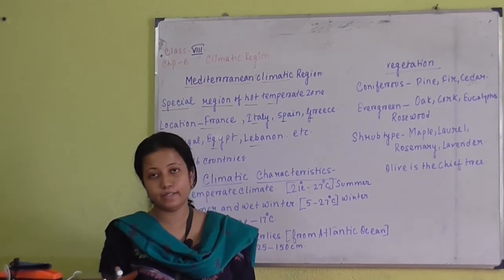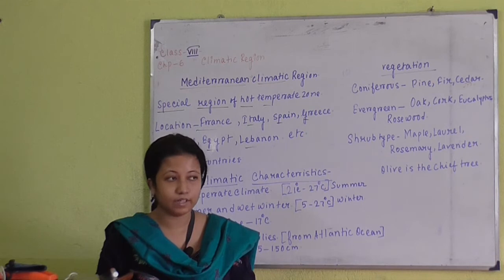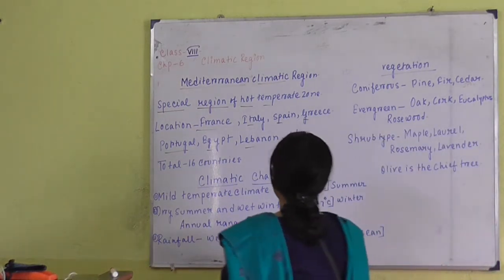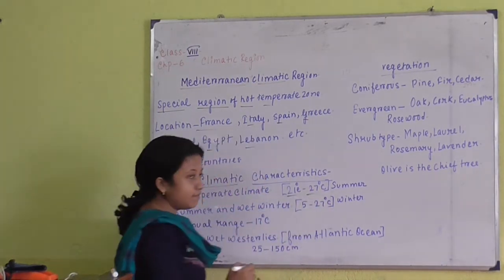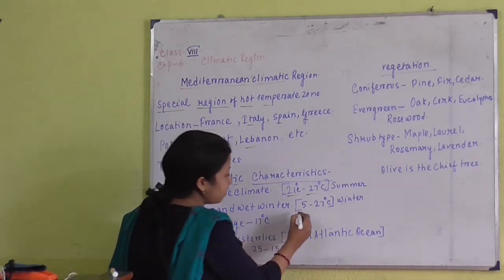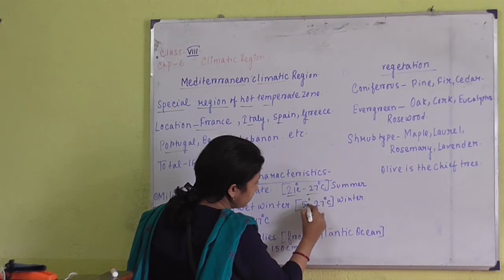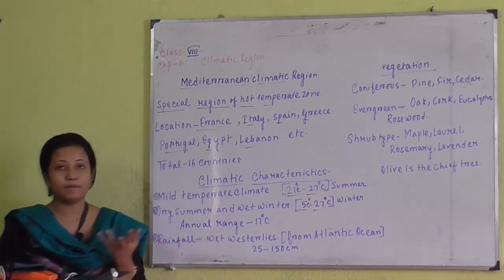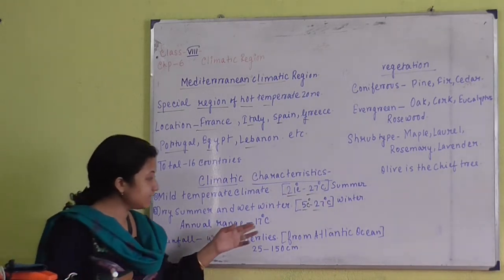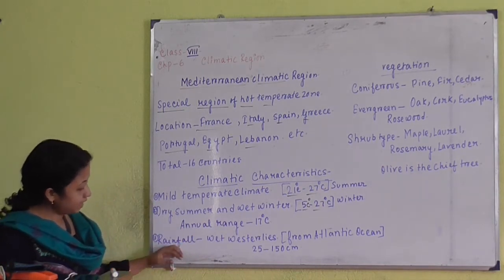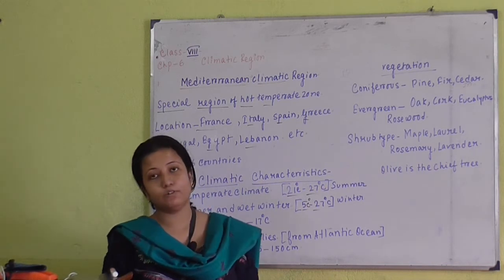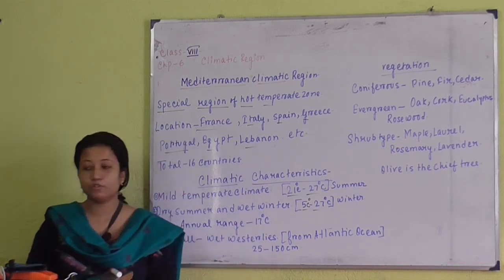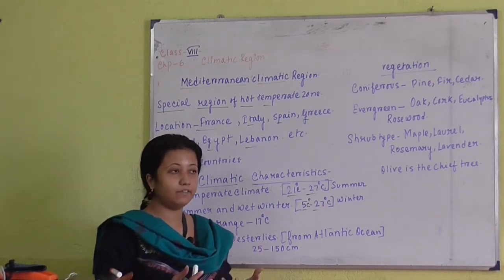Places which experience Mediterranean climate have dry summers and wet winters, meaning rainfall does not occur in summer but happens in the winter season. Summer temperatures are generally 21 to 27 degree Celsius, while winter temperatures range from 5 to 27 degree Celsius. The annual range of temperature — the difference between maximum and minimum temperatures recorded throughout the year — is 17 degree Celsius on average. Rainfall is influenced by wet western winds originating from the Atlantic Ocean, which bring rainfall in winter. This region is also called the land of winter rainfall.